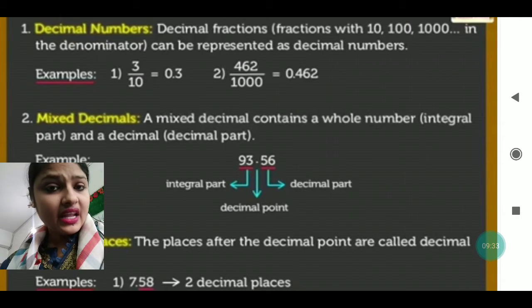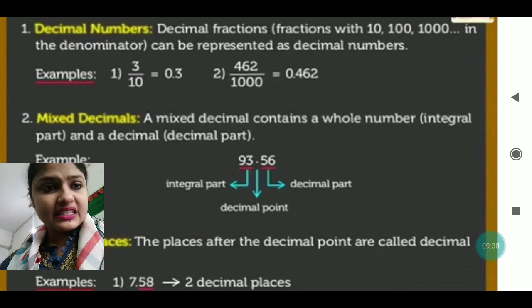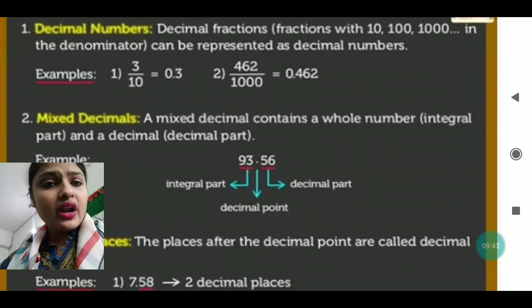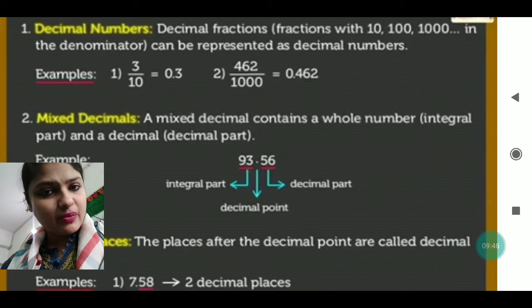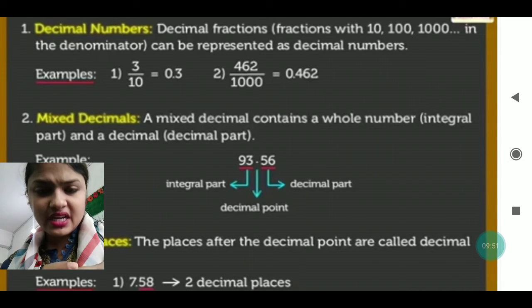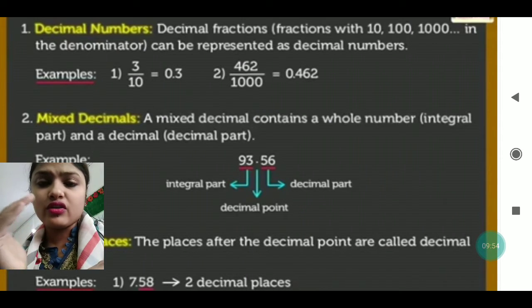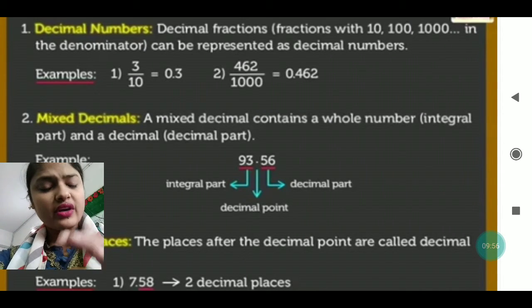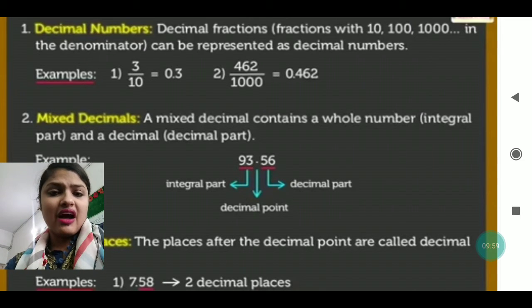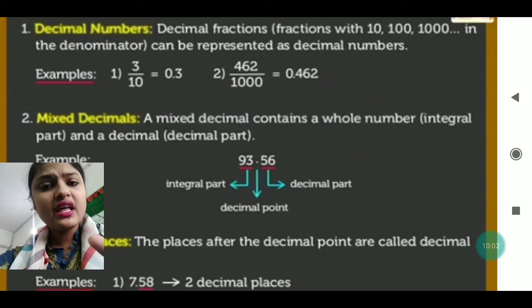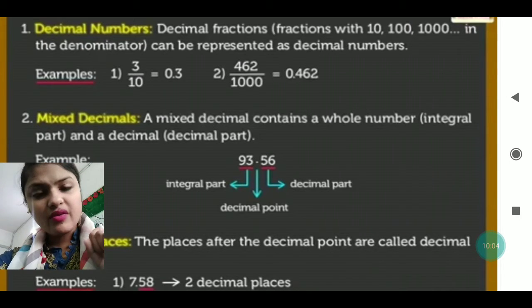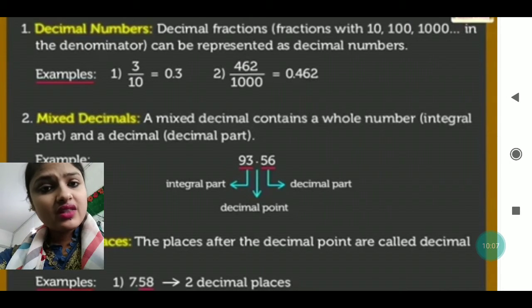Now for a quick review: a decimal fraction is a fraction with 10, 100, or 1000 in the denominator, which can be represented as a decimal number. For example, 3/10 is written as 0.3, and 462/1000 is written as 0.462. The number of zeros in the denominator tells us how many digits to place after the decimal point.